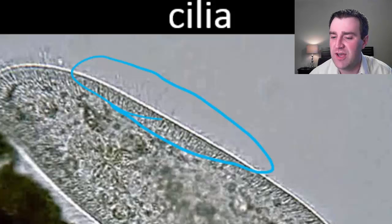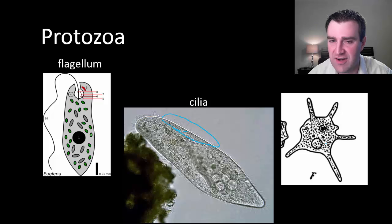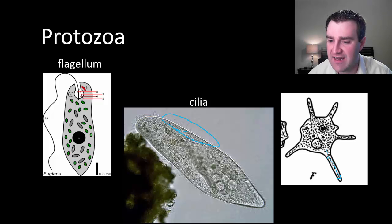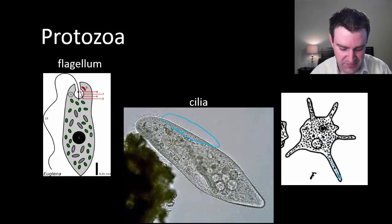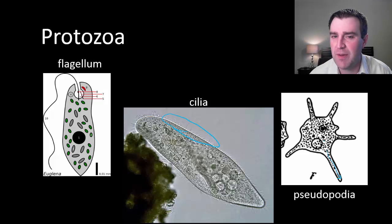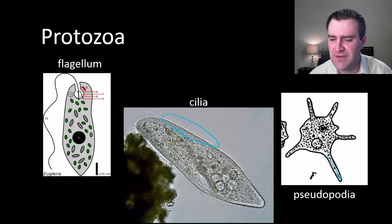Amoeba have a more interesting movement strategy — they extend their cytoplasm outward, kind of reaching out, and then anchor that extension and use it to move the entire rest of the cell. Those extensions are called pseudopodia, or pseudopods — 'false feet' is essentially the root of that word.